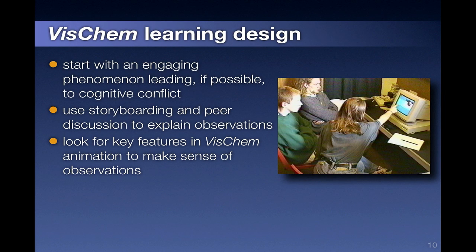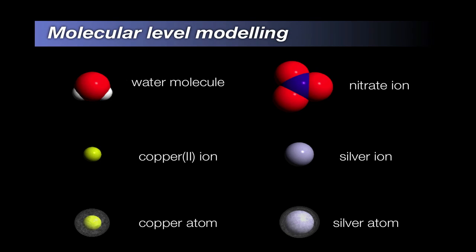Having challenged the student's mental model and found it incapable of explaining the observations, the student is ready to learn a better model. Molecular animations are information dense, so it is essential to show all the graphical symbols and what they mean. Preferably, you should use the same symbols consistently throughout the chemistry course, so their molecular level model builds in complexity as you go.